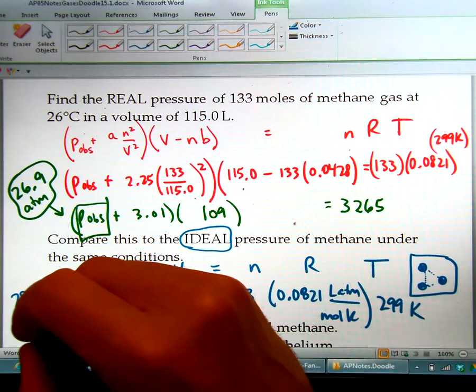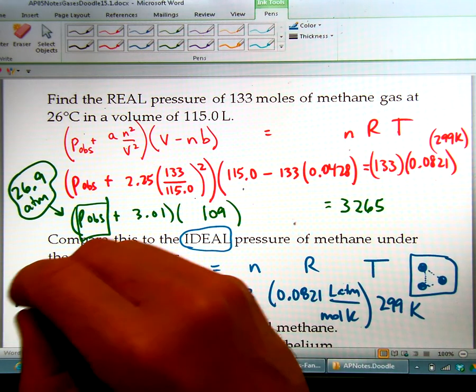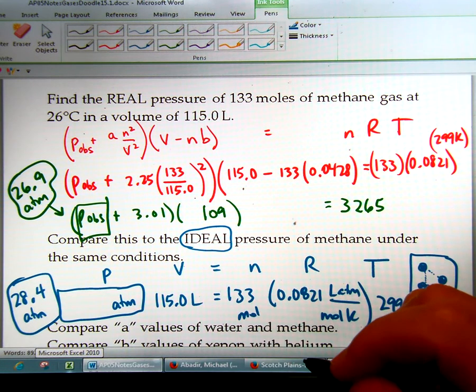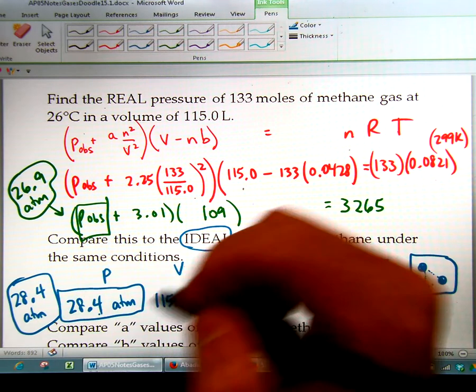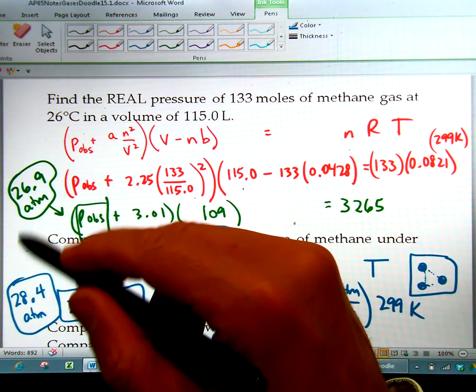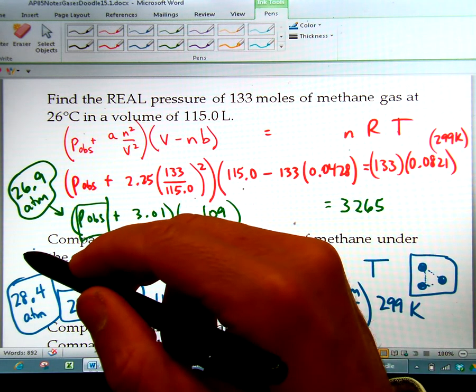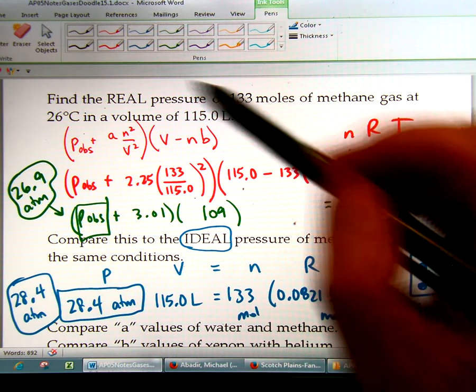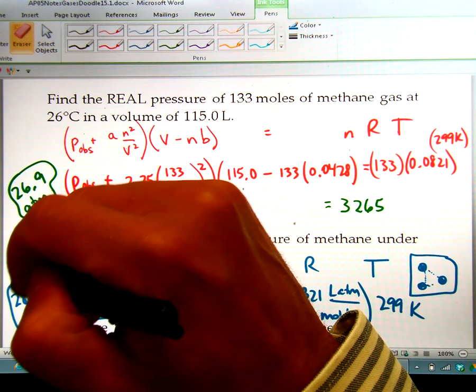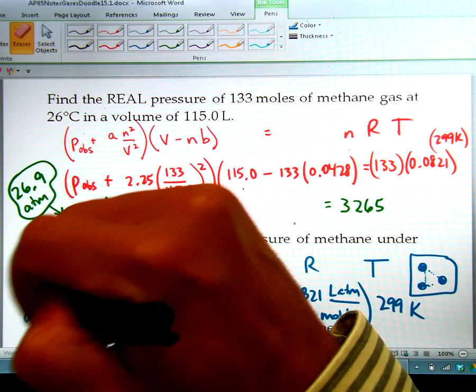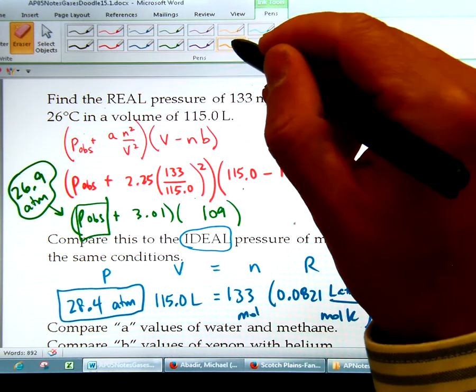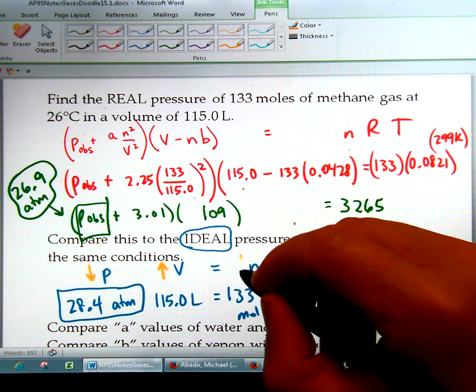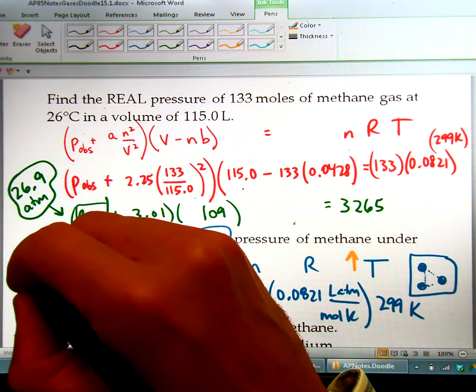So you can see that the answers are not that close. So what we find is that the answers are going to be different when the conditions are not that ideal. The reason why these conditions are not so ideal is because you have such a high number of moles. The most ideal conditions that you can have are to have a low pressure, a high volume, a low number of moles, and a high temperature.